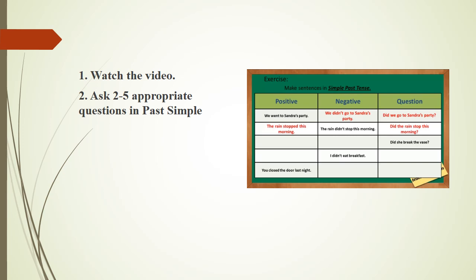Next, did she break the vase? For the positive statement, it should be: She broke the vase. The next one: I didn't eat breakfast. The positive statement should be: I ate breakfast. And the question is: Did I eat breakfast? The last one: You closed the door last night. The negative sentence is: You didn't close the door last night. And the question is: Did you close the door last night? Did you get it right?